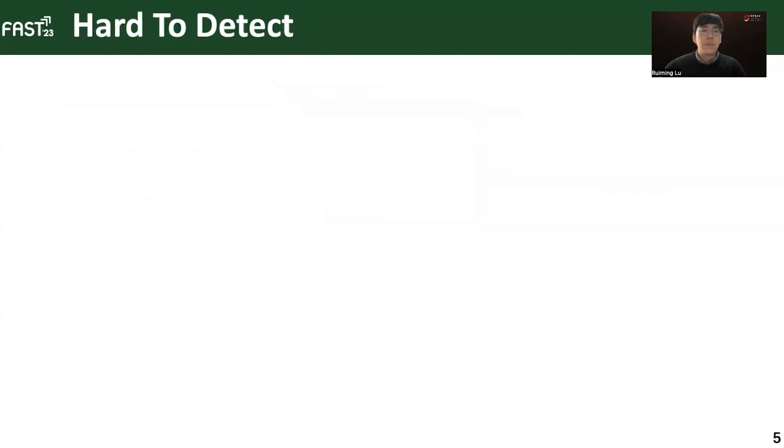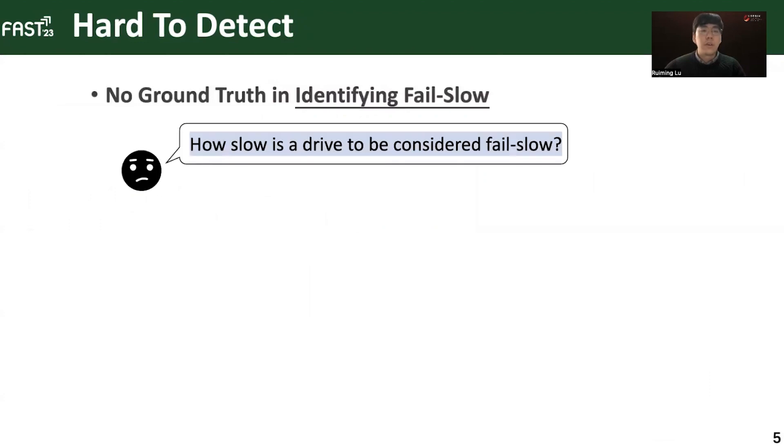However, fail-slow failures are hard to detect. There's no ground truth in identifying fail-slow. Unlike fail-stop failures where the criteria is clear, there are a thousand ways to define fail-slow. For example, on-site engineers are often confused and ask how slow is the drive to be considered fail-slow, and the answers may vary across different people.